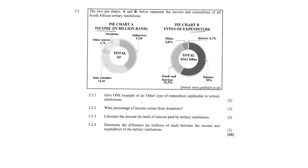So 5.2.1, give one example of other type of expenditure applicable to tertiary institutions. One example of other, well, maybe it's like advertising costs. You know, they want more students coming in, bursaries, grants. Maybe it's like copyright payments as well. So there's a whole host of possible answers here. I think ads. Let's just go with ads, advertisements.